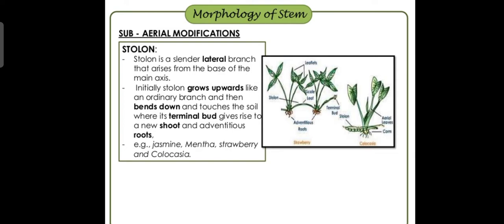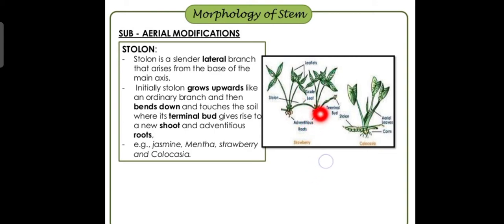Initially the stolon grows upwards like an ordinary branch, then bends downward and touches the soil, going underground. Where its terminal bud gives rise to a new shoot — after going into the soil, the terminal bud grows into a new plant, and adventitious roots also develop.